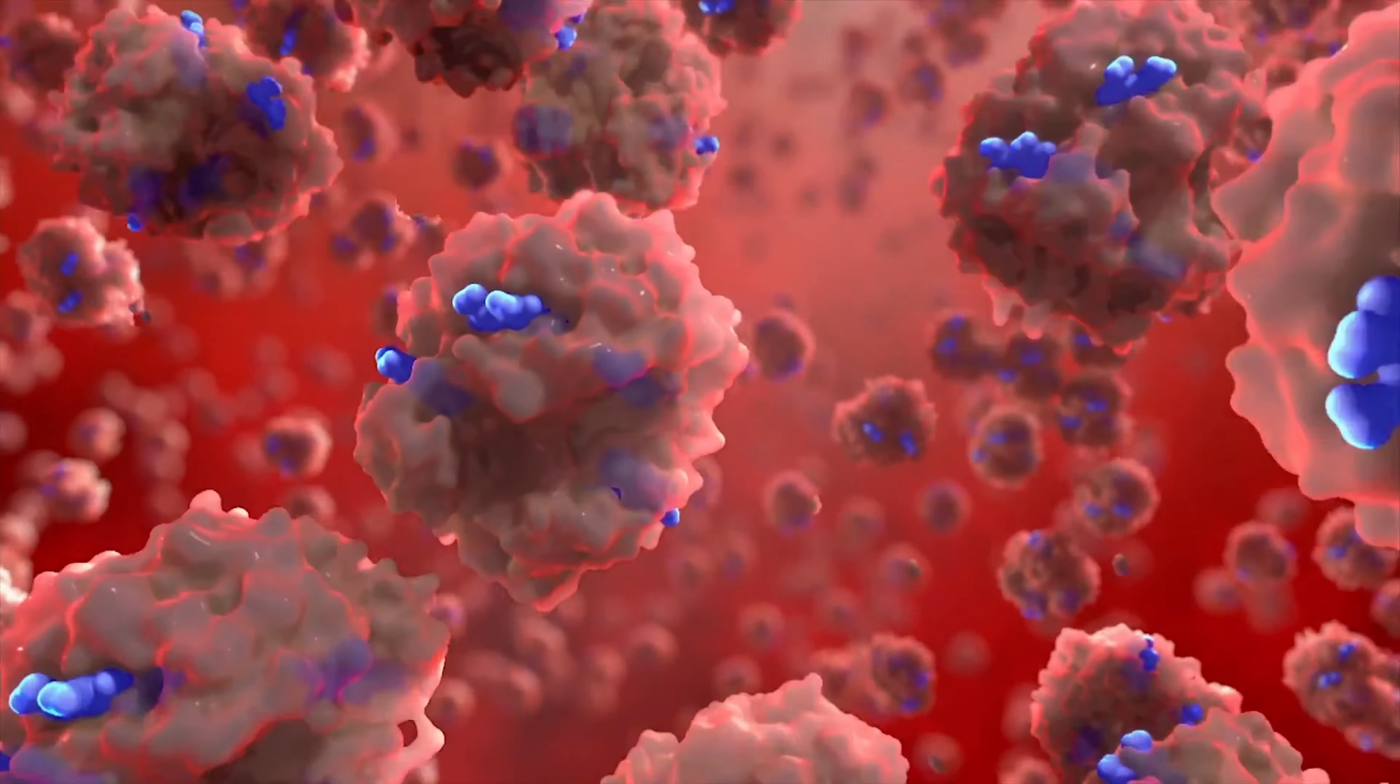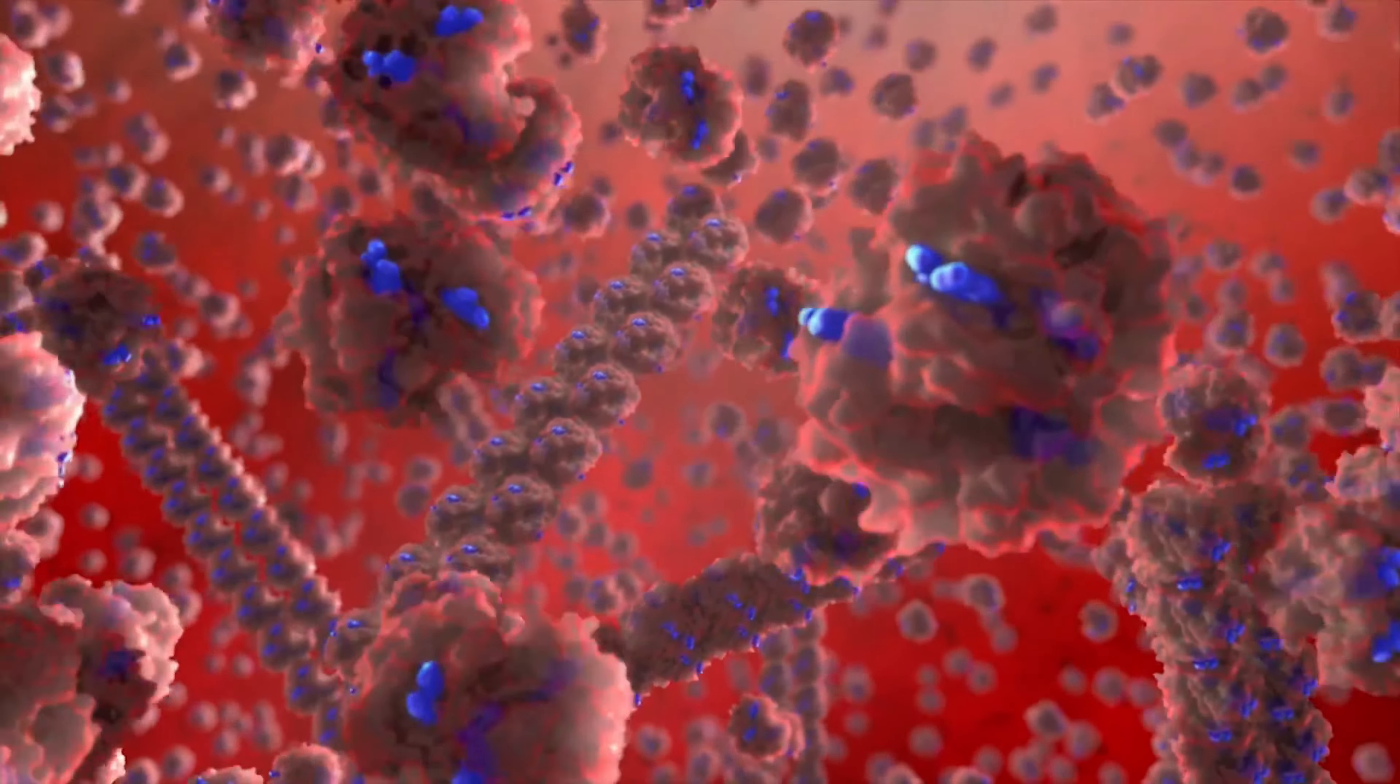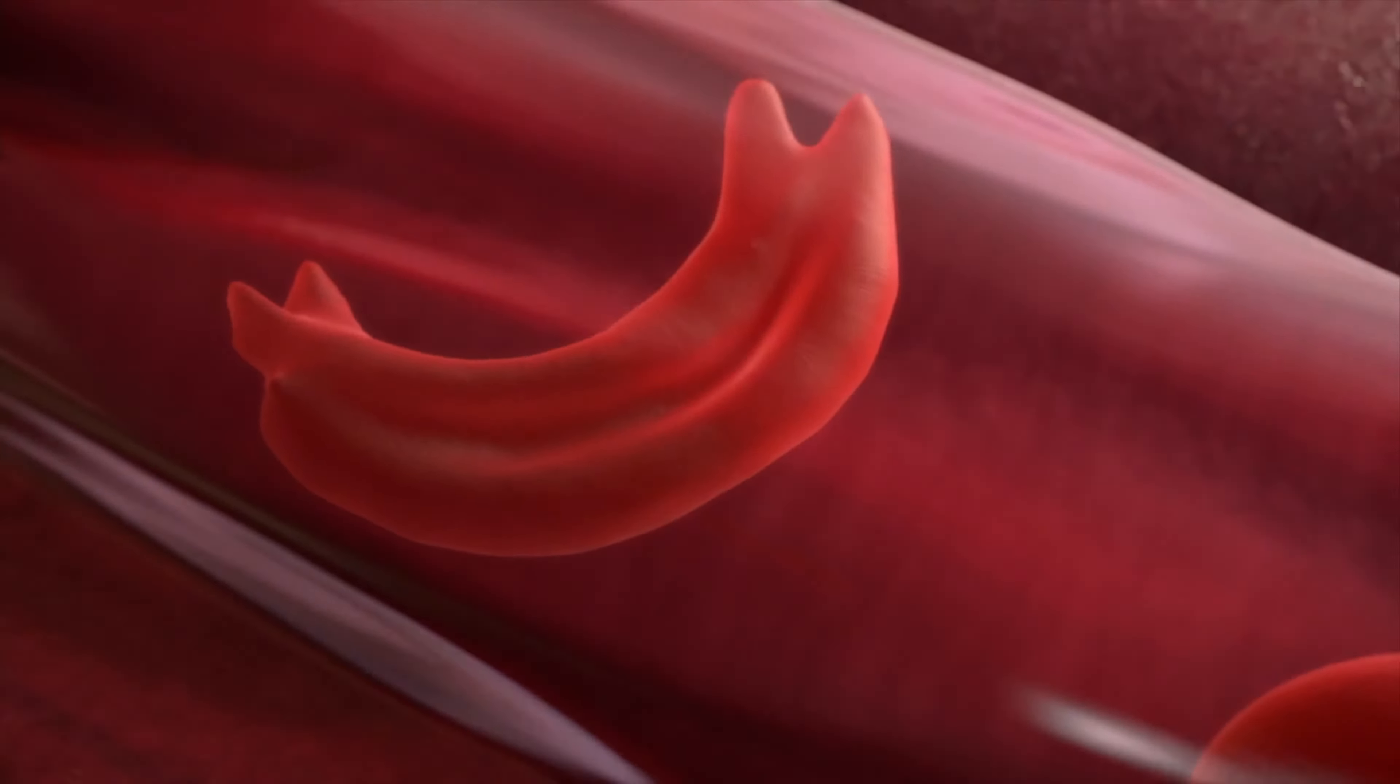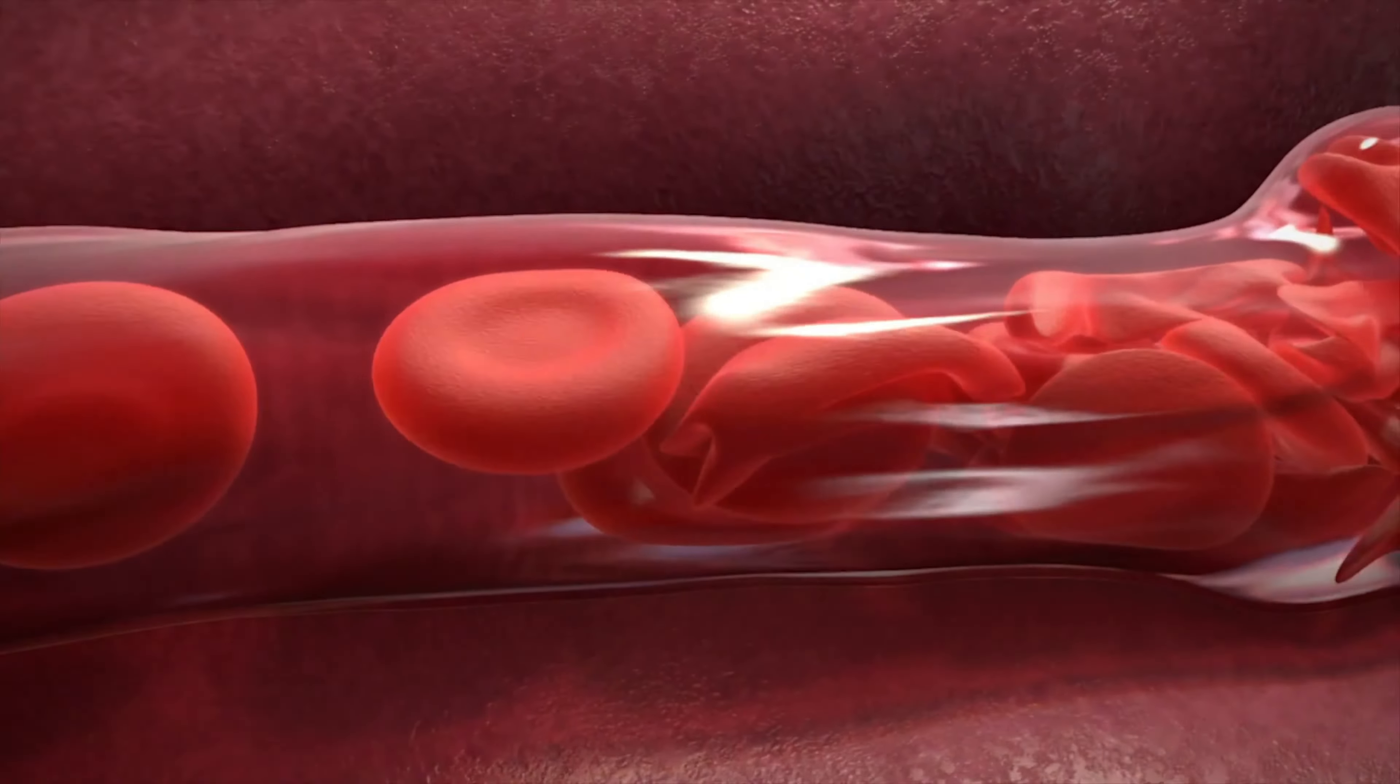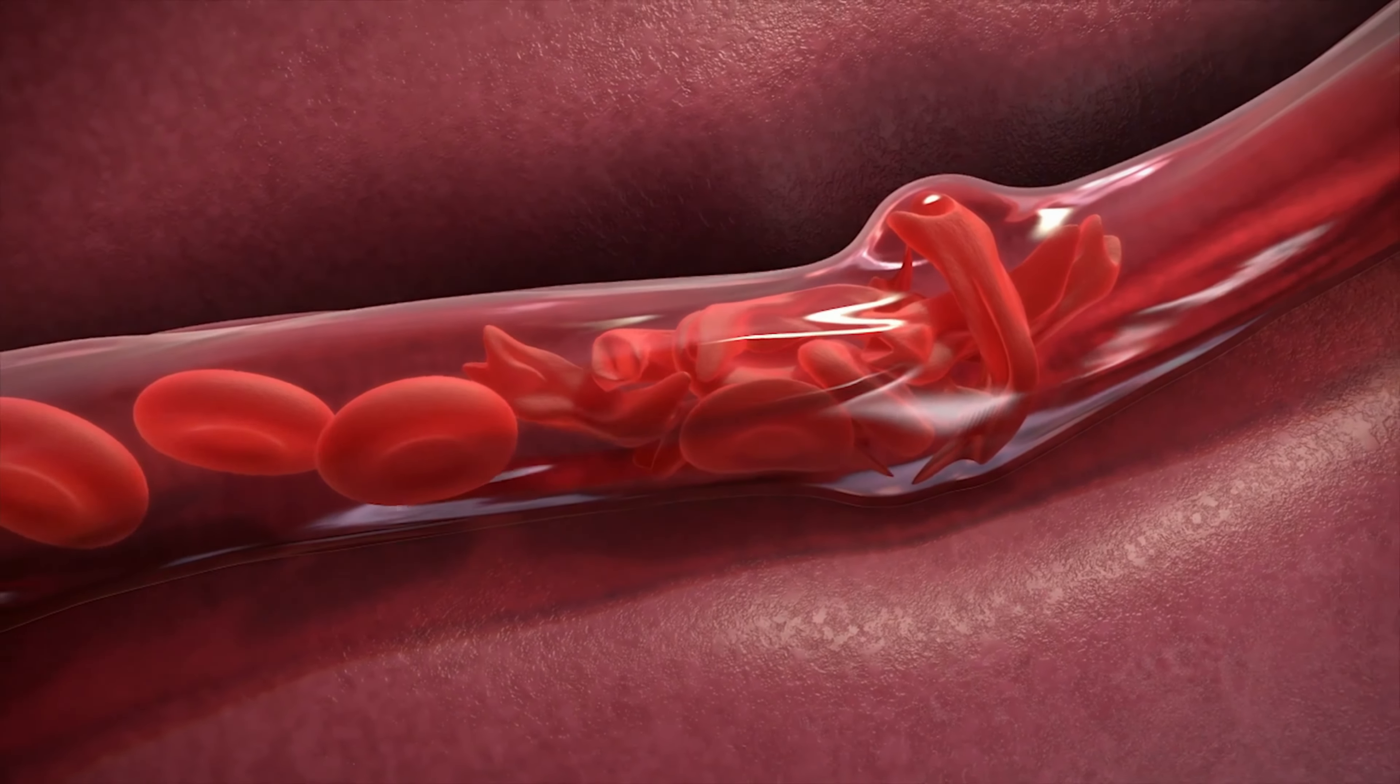This single nucleotide change alters only one amino acid in the protein chain, but the results are devastating. Molecules of sickle cell hemoglobin stick to one another, forming rigid rods. These rods cause a person's red blood cells to take on a deformed, sickle-like shape, thus giving the disease its name.